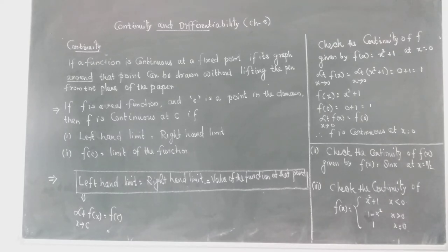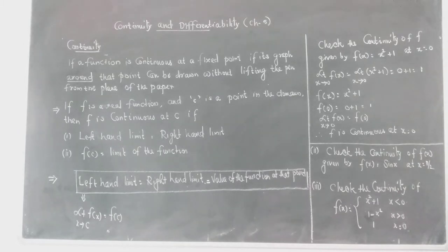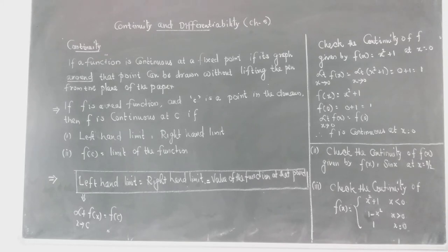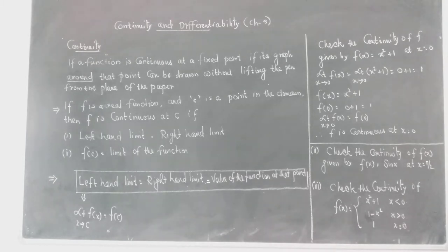That is what we are writing down as the first line. If a function is continuous at a fixed point, its graph around that point can be drawn without lifting the pen from the surface. So that is extremely important — if you are able to draw the graph without lifting the pen, then definitely the graph will be continuous.